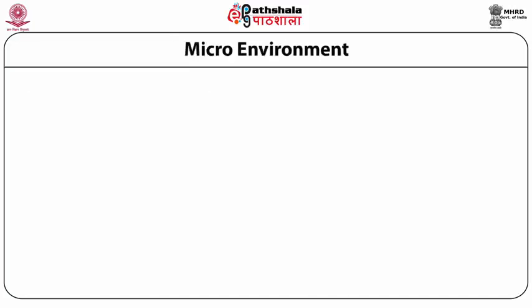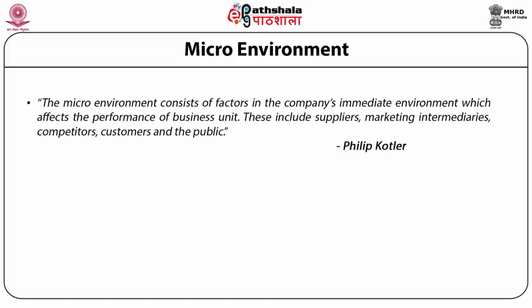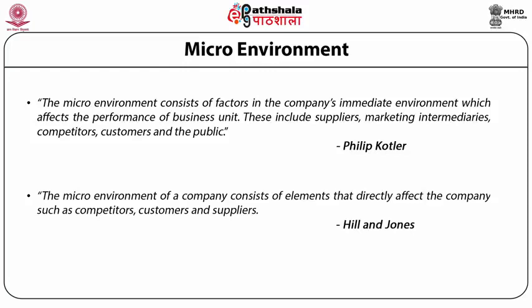The external environment is composed of two broad kinds: micro environment and macro environment. According to Philip Kotler, the micro environment consists of factors in the company's immediate environment which affect the performance of the business unit. These include suppliers, marketing intermediaries, competitors, customers, and the public. According to Hill and Jones, the micro environment of a company consists of elements that directly affect the company, such as competitors, customers, and suppliers.